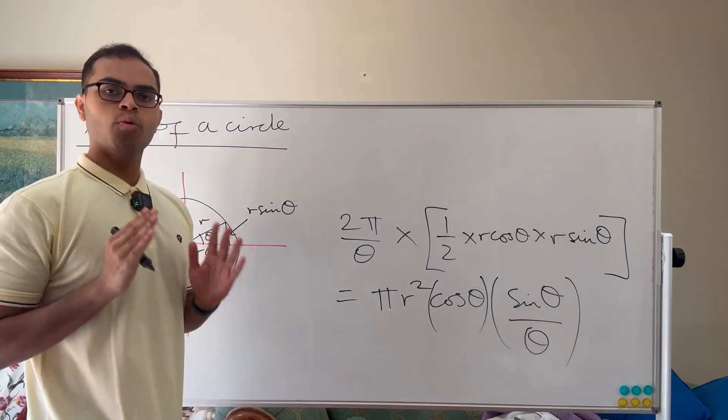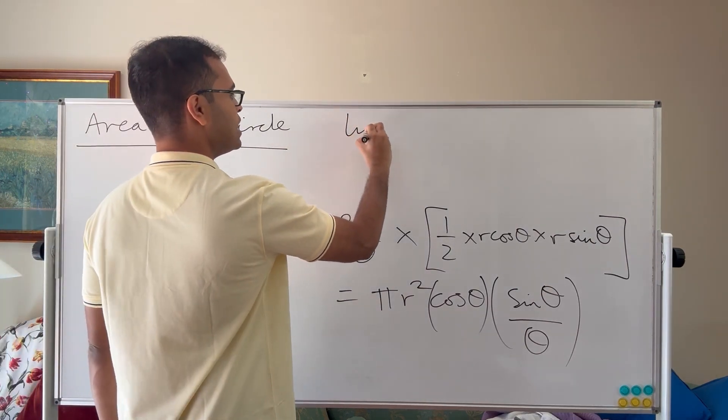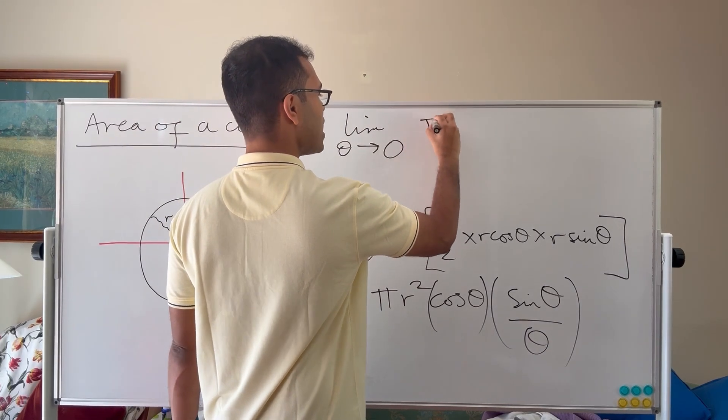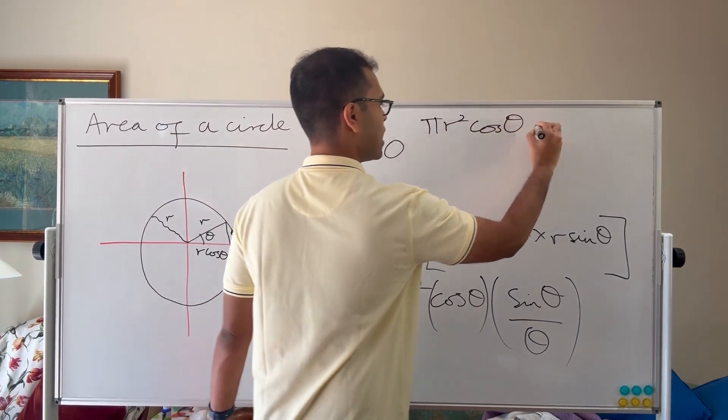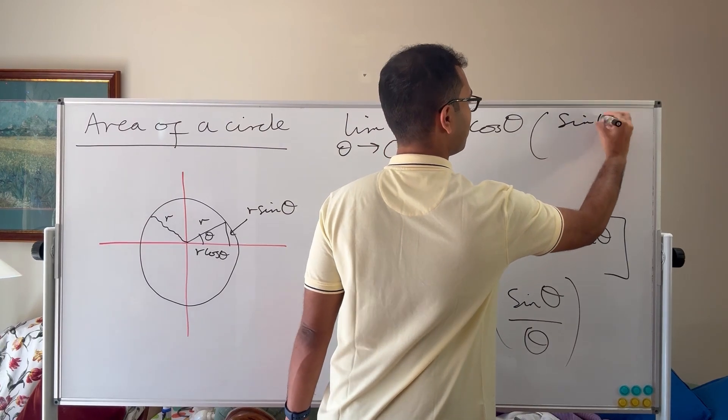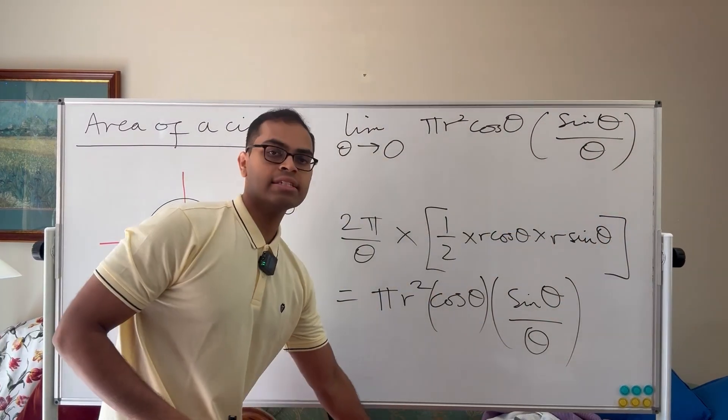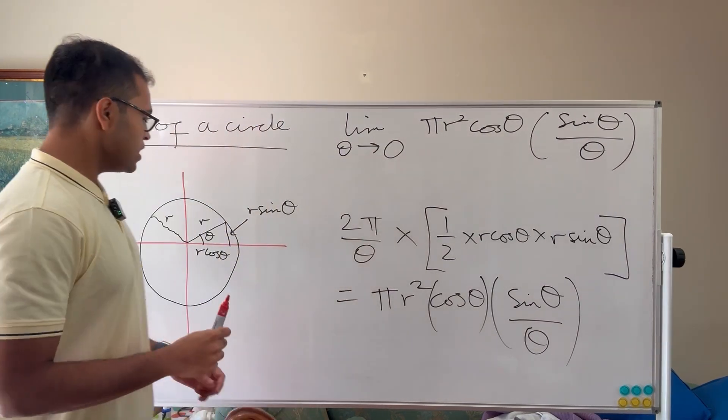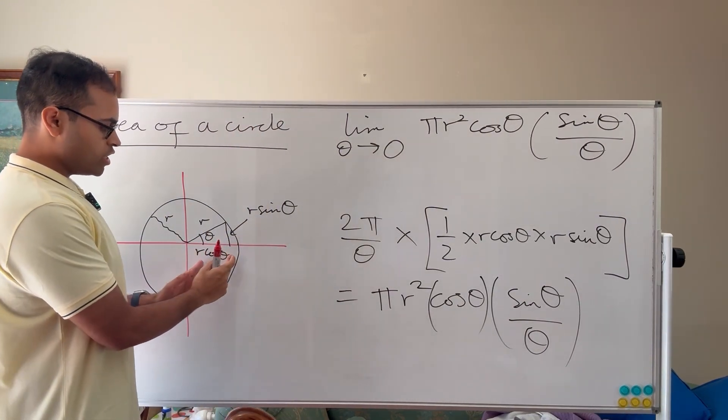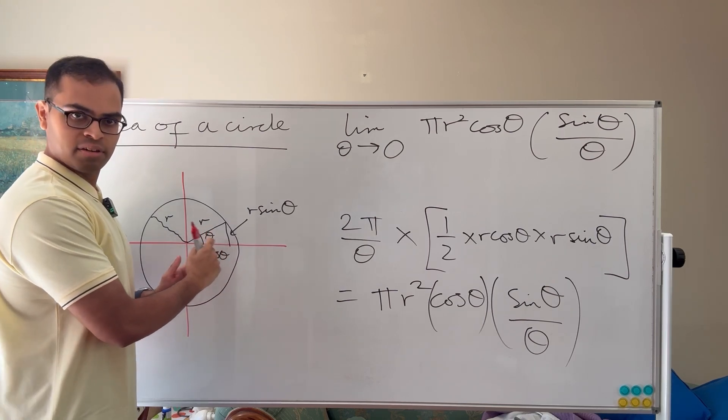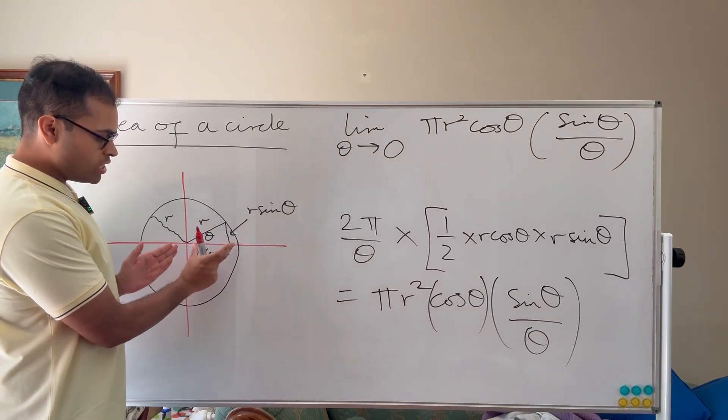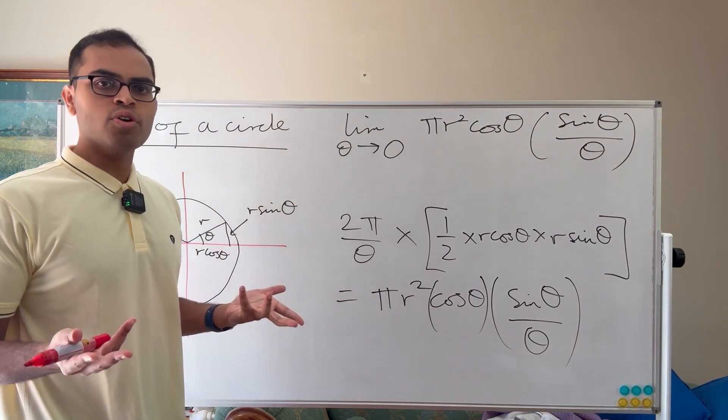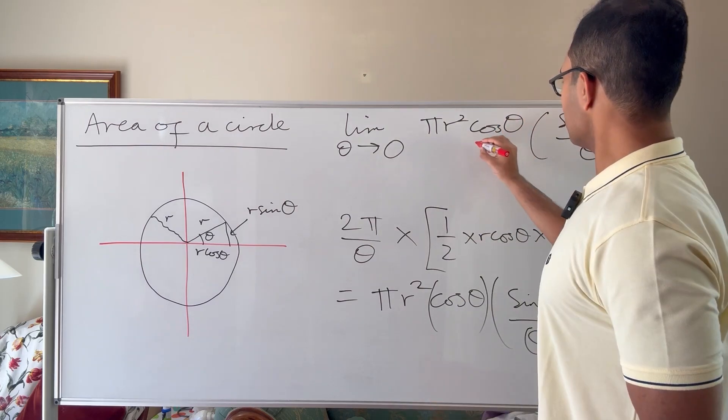Now this is where it gets beautiful. We're interested in limit θ goes to zero of π r squared times cos θ times sin θ over θ. And now the interesting thing here is that as θ approaches zero, cos θ approaches one. Because if you think about cos θ, it's going to be the side length of the base of this triangle. So as θ approaches zero, it's going to exactly approach r, cos θ is going to exactly approach r. Or if you know cos zero is one, there's nothing to that. So this is approaching one.